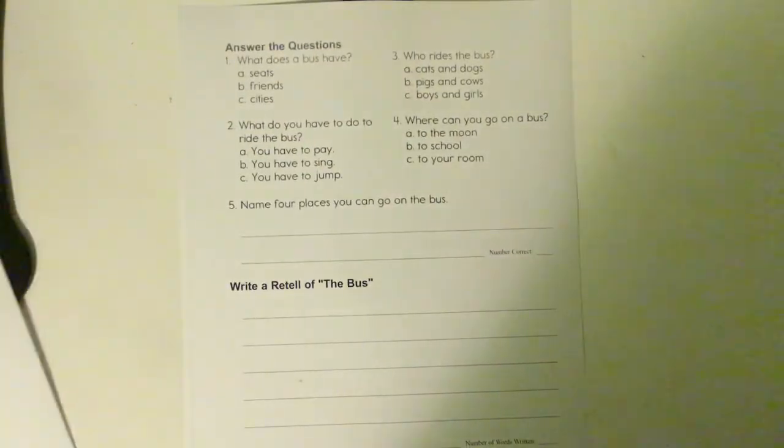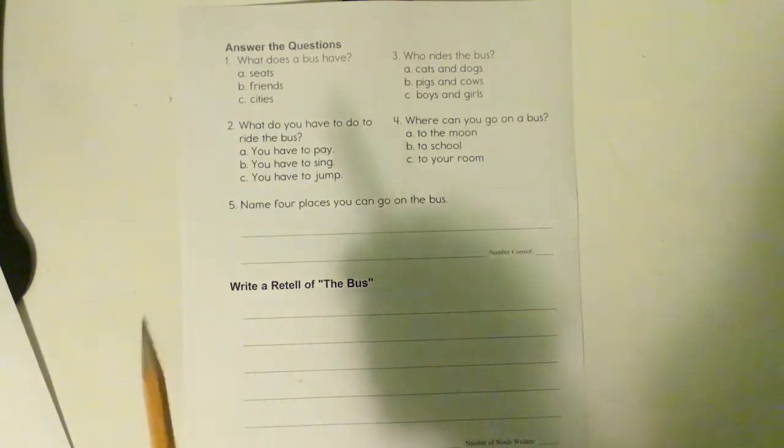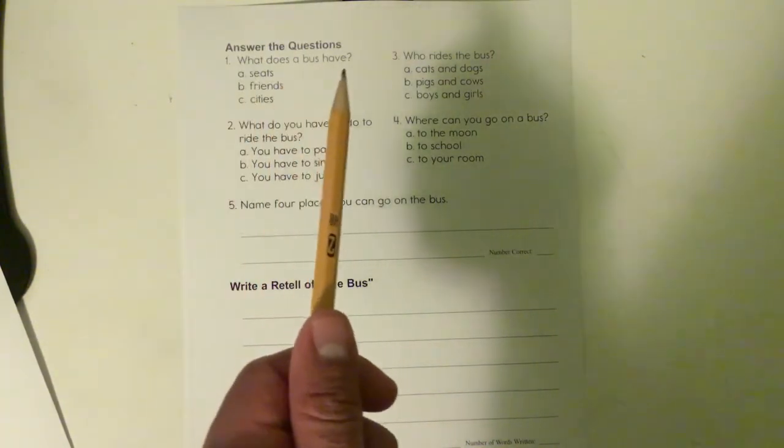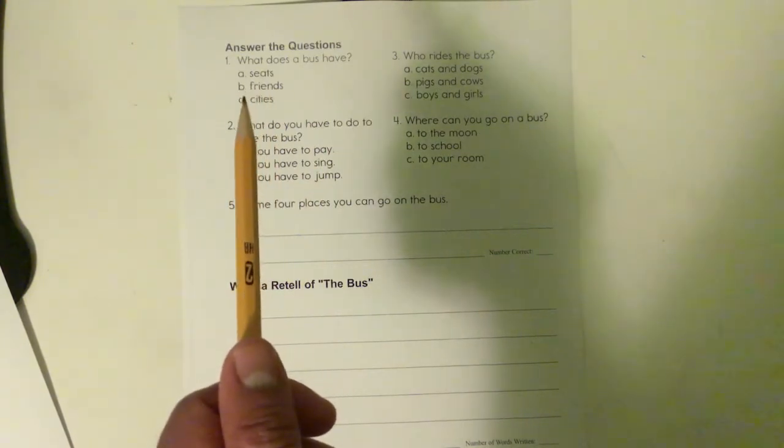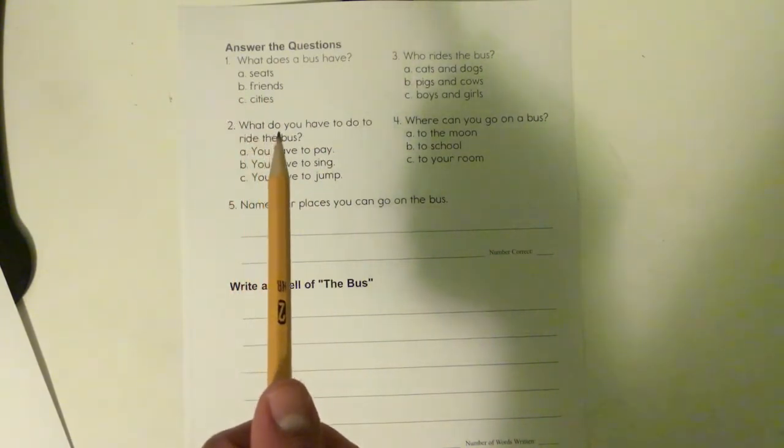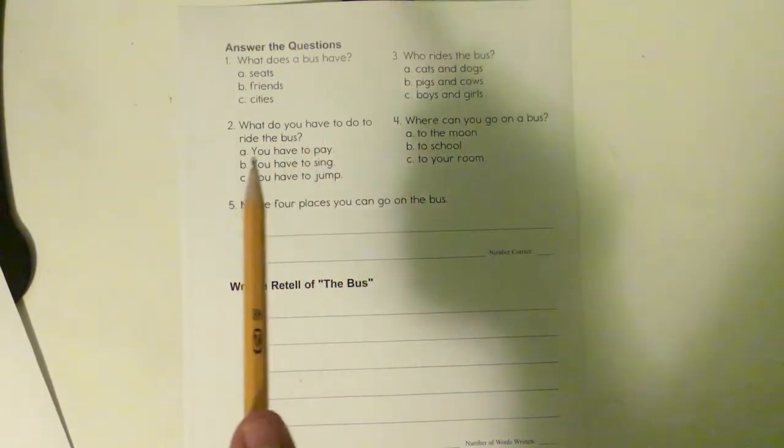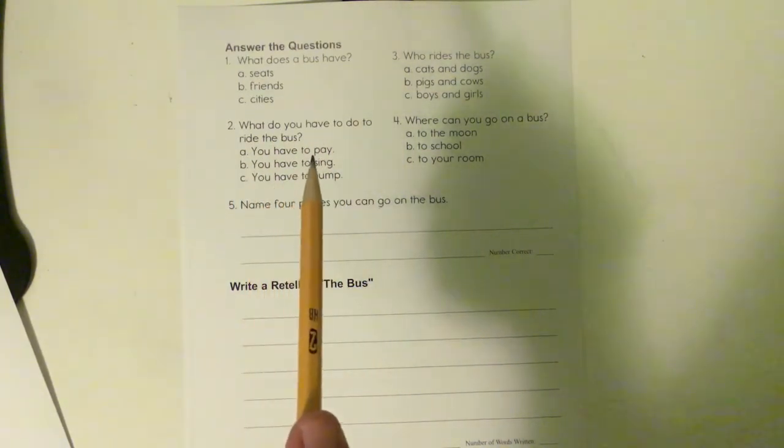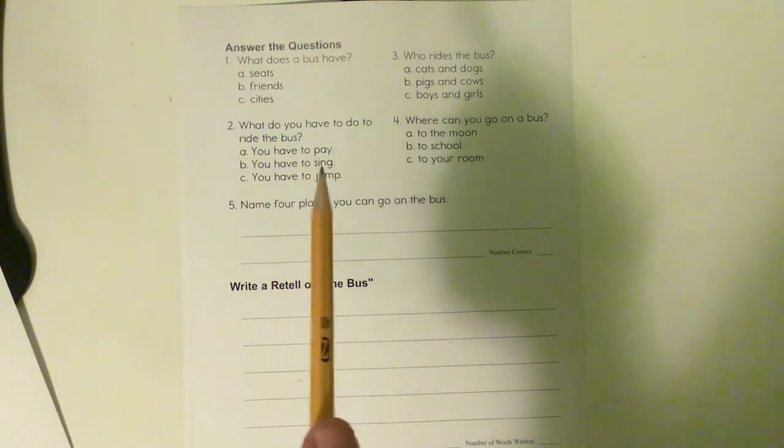Page two, answer the questions. What does a bus have? A - seats, B - friends, C - cities. Number two, what do you have to do to ride the bus? A - you have to pay, B - you have to sing, C - you have to jump.